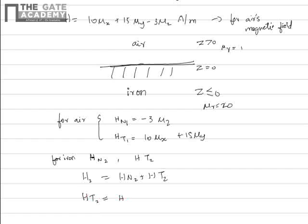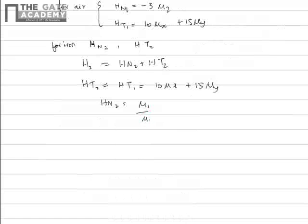H_T2 equals H_T1, that is 10μ_x plus 15μ_y. H_N2 that we have to find is equal to μ_1 by μ_2 into H_N1, that is 1 by 20 into minus 3μ_z.